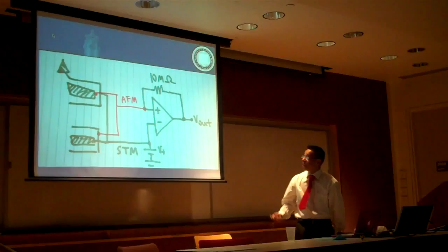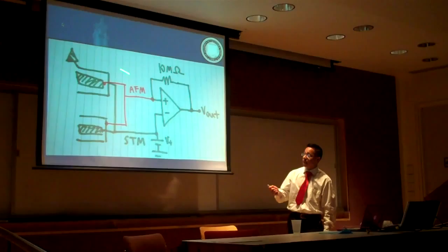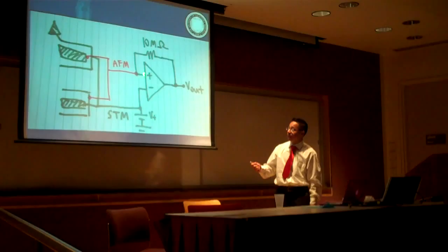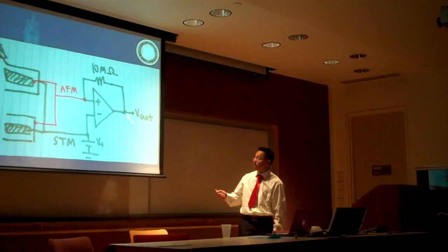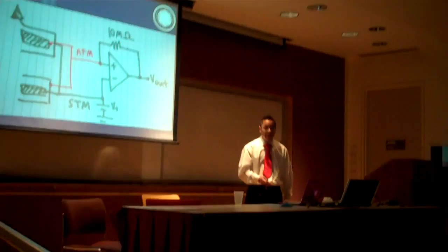Here's a simple schematic that we had. As you can see, we ground our STM because we're mainly focusing on the AFM. We ground our STM into our ground, and this is our op amp right here. We send the signal into our op amp, which turns it into a voltage, and it goes out as our V-out into the spectrum analyzer. The reason we have a 10 megaohm resistor here is that we need high resistance in order to amplify and get a large signal out so we can read the frequency.